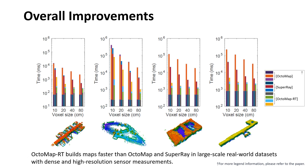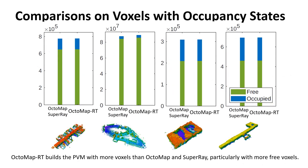OctomapRT builds maps faster than Octomap and SuperRay in large-scale real-world data sets with dense and high-resolution sensor measurements. OctomapRT also makes more accurate maps with 0.52% higher occupancy grid count than Octomap and SuperRay, particularly with more free voxels.